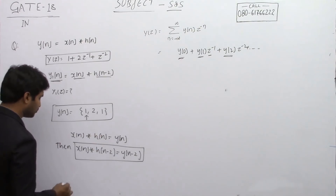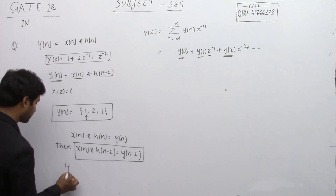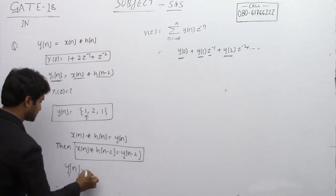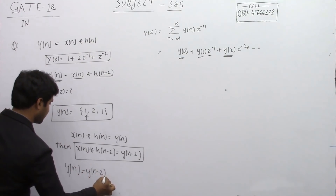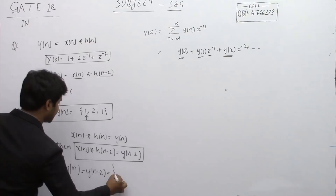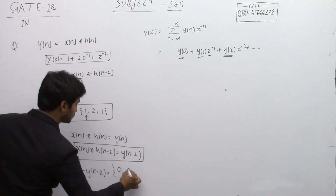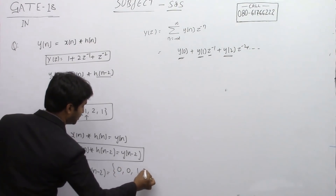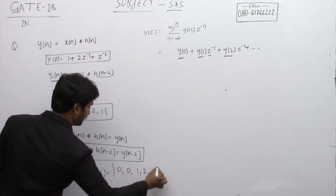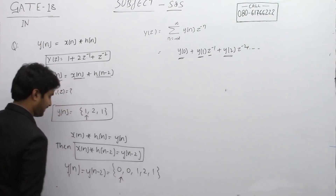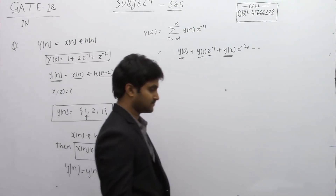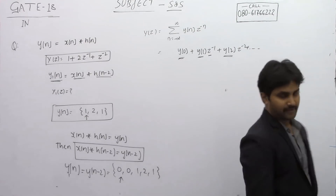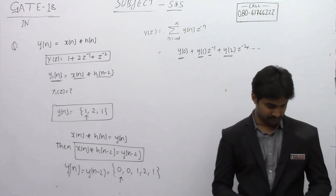Apply the delay of 2 units. So y(n-2), which is nothing but y1(n), equals {0, 0, 1, 2, 1} — the original sequence shifted by 2 units.